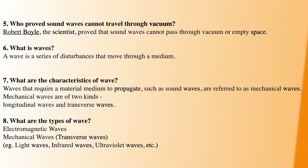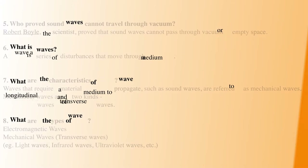What are the types of waves? There are two major types: mechanical waves and transverse waves. Examples of transverse waves are light waves, infrared waves, and ultraviolet waves.